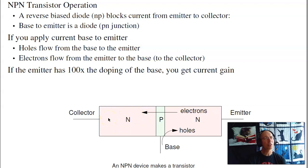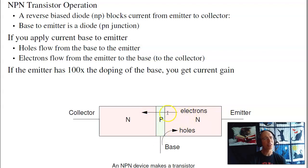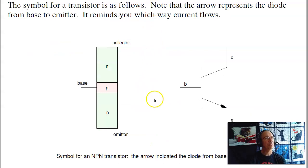What you wind up with is a current-controlled current device. For every hole that I provide base to emitter, I get an electron. Moreover, I can get current amplification. If I make the doping in the emitter 100 times the doping in the base, I'll have 100 electrons for every hole. That gives you a current gain, so that the current is current gain HFE or beta times the base current. Here's the symbol for a transistor — it's an NPN device. Base to emitter is a PN junction, denoted by this arrow. That arrow denotes a diode, and this diode is all important.